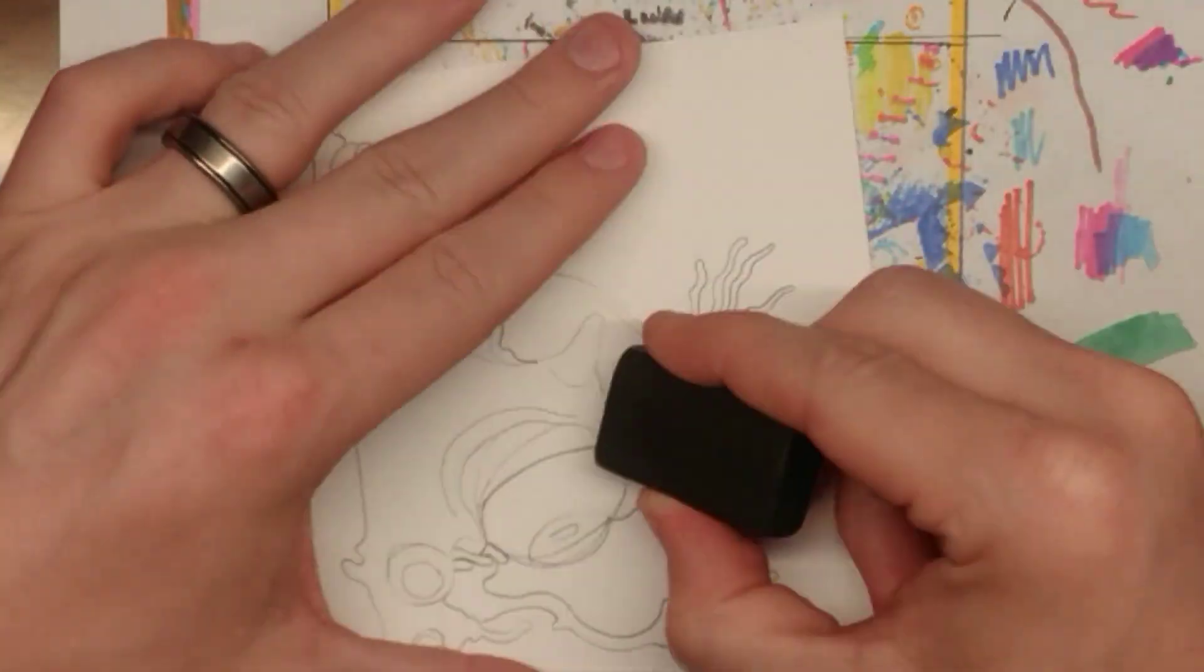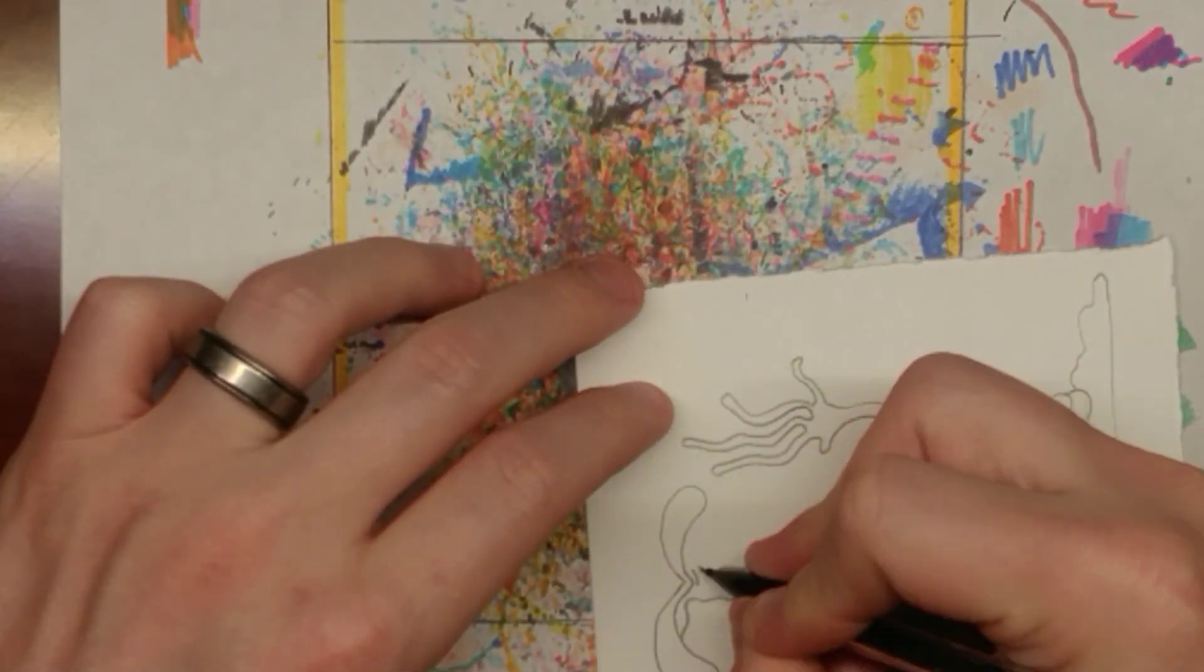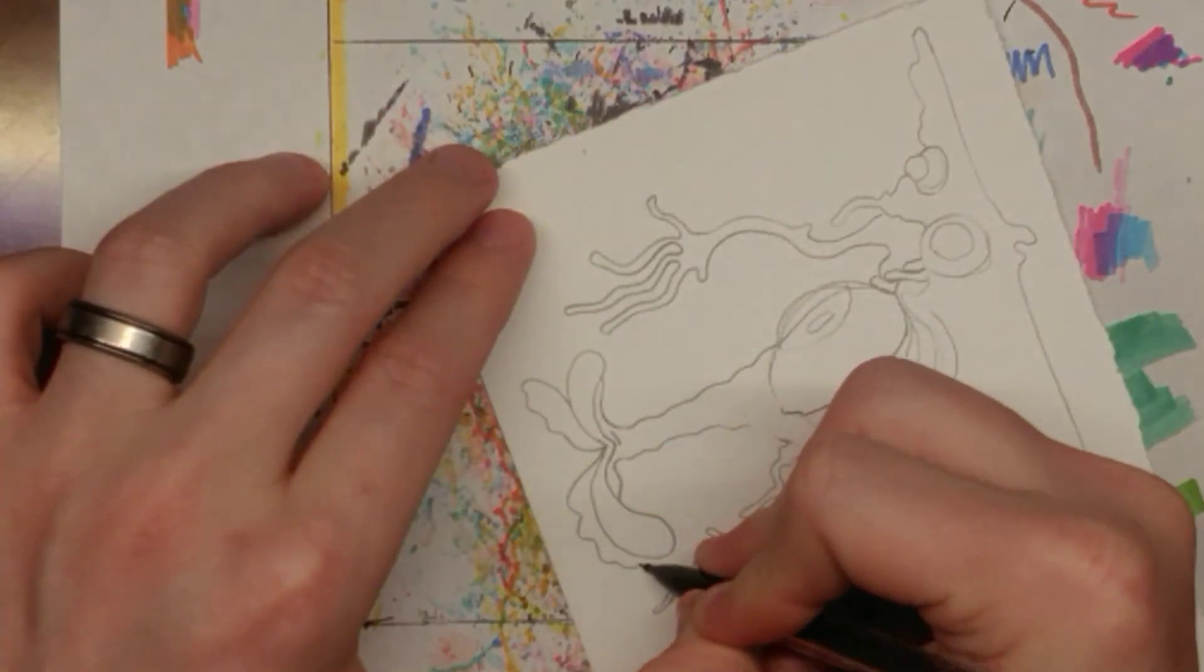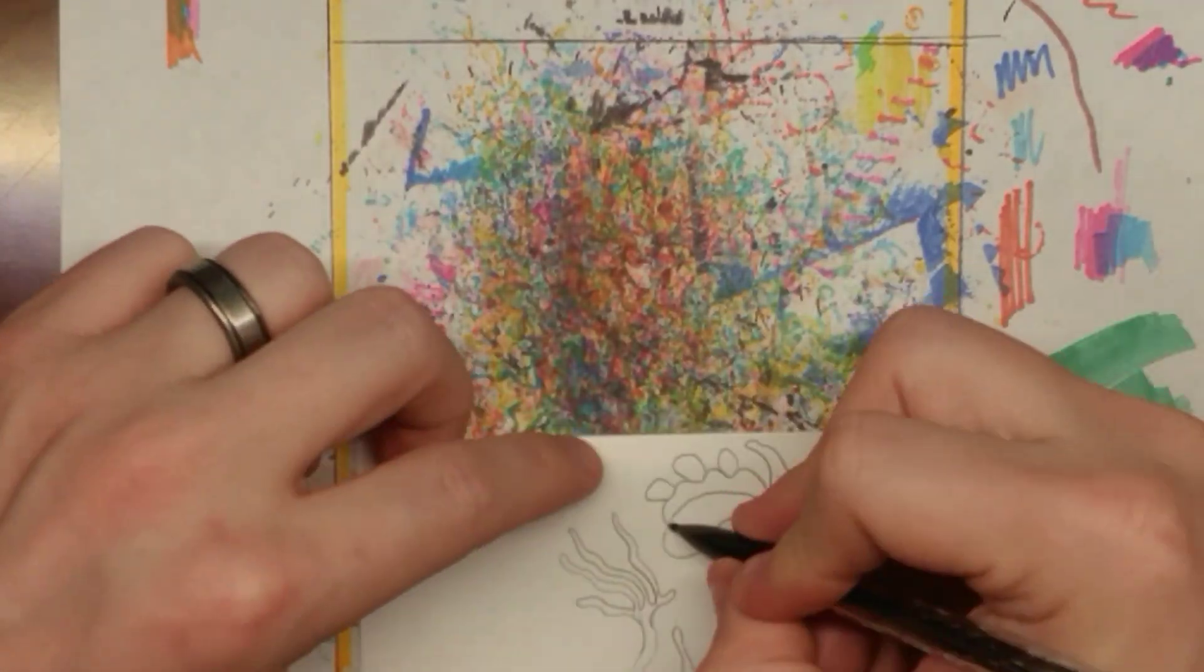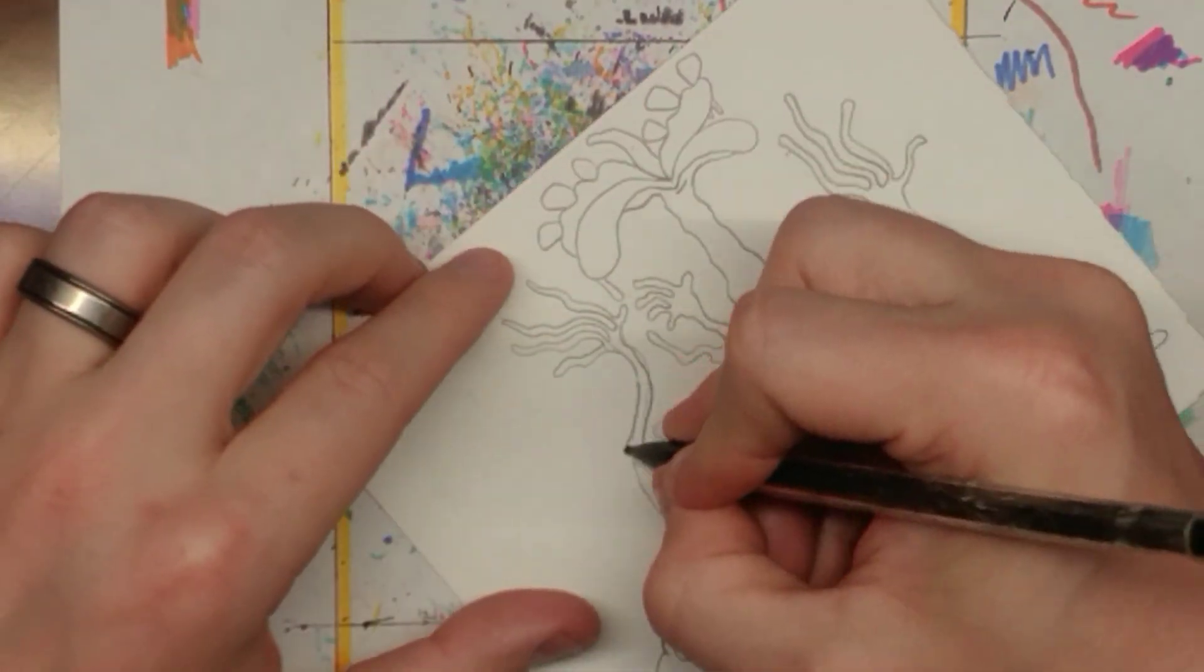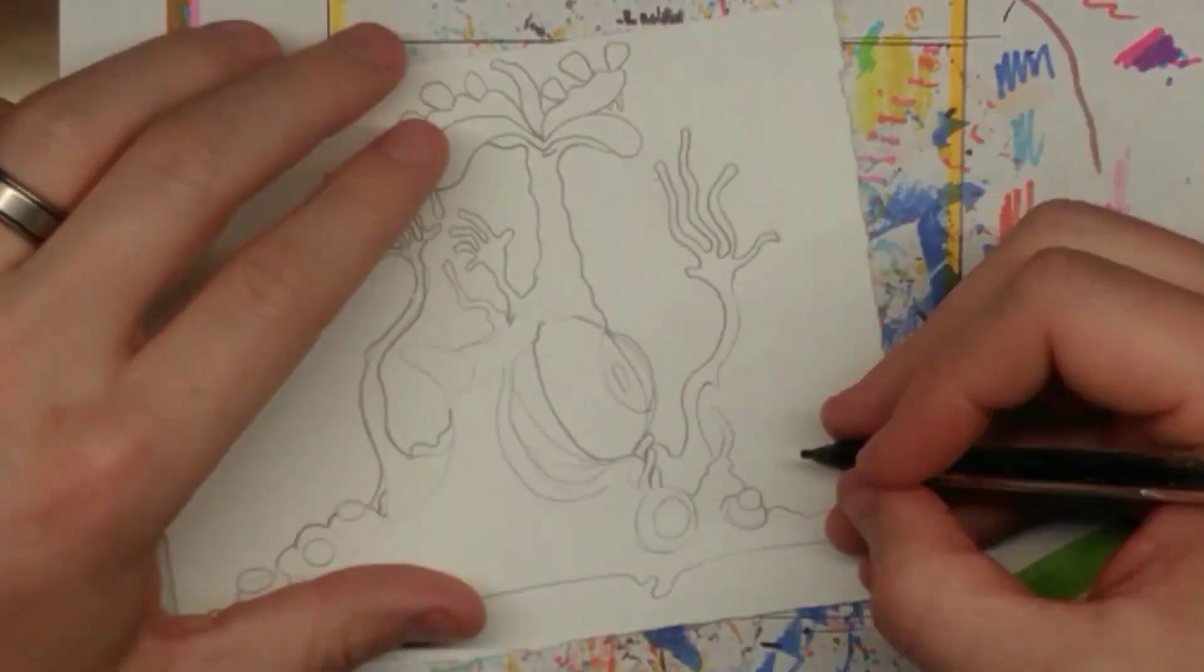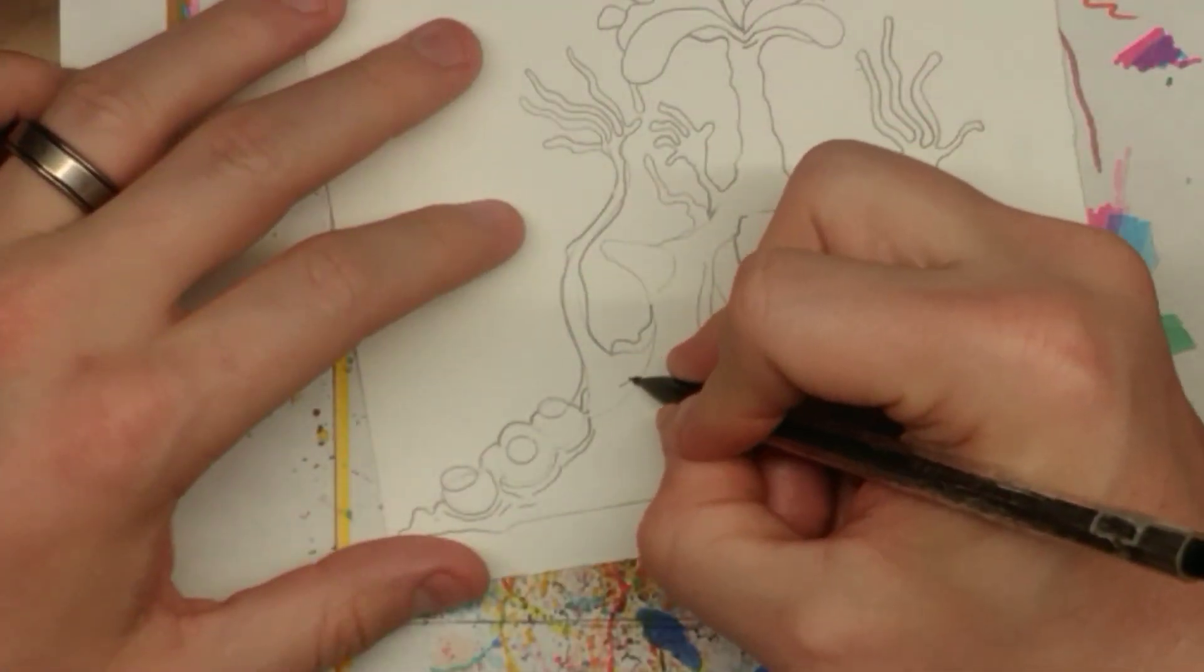But anyway, what we are drawing today is a skin blob monster with a kind of like a flower made out of teeth and gums and lips up on its head.